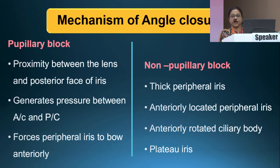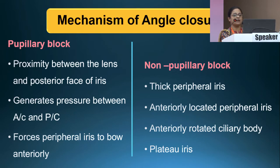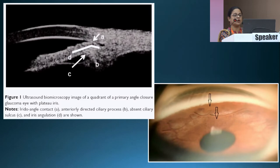Primary angle closure disease may occur by two mechanisms: pupillary block or non-pupillary block. Pupillary block occurs when there is proximity between the lens and the posterior surface of the iris, generating pressure between the anterior and posterior chambers and forcing the peripheral iris to bow anteriorly. In non-pupillary block, the iris plays the main role — there is thick peripheral iris, anteriorly located peripheral iris, anteriorly rotated ciliary body, and plateau iris. On UBM imaging, plateau iris shows iridocorneal contact, anteriorly rotated ciliary body, angulation of the iris, and absent ciliary sulcus, seen gonioscopically as a double hump pattern or sine wave sign.